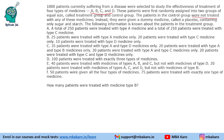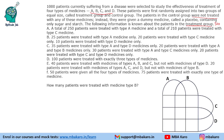The following information is known about the patients in the treatment group. There are 500 patients in the treatment group. We have 4 different types of medicine, and people are given different combinations of medicines. So we shall draw a 4-set Venn diagram like this.